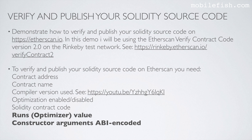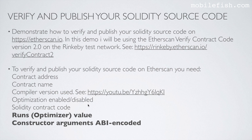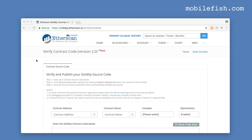To verify and publish your Solidity source code on Etherscan you need your contract address, your contract name, and you need to know the compiler version used. You also need to know if your optimization is enabled or disabled, your Solidity contract code, the RUNS optimization value, and the constructor arguments ABI encoded. These values are required by the Verify contract code version 2.0.